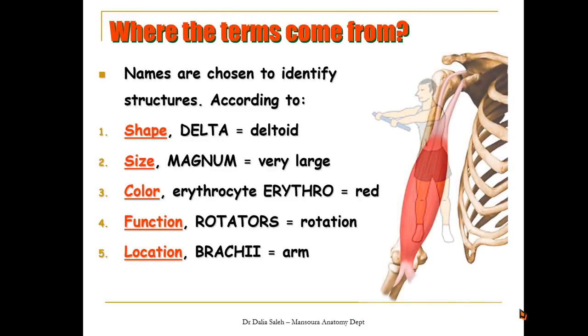Also structures can be named according to their location in the body. As in this example, we have the biceps brachii muscle, brachium here means arm. So by adding the location, we know now that this muscle lies within the arm.